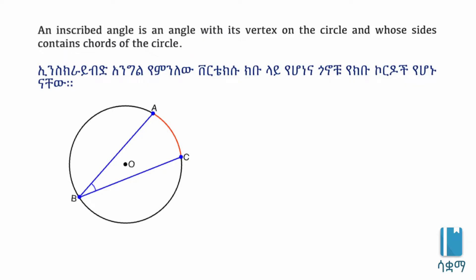The chord is a line segment. The inscribed angle is an angle with its vertex on the circle and whose sides contain chords.